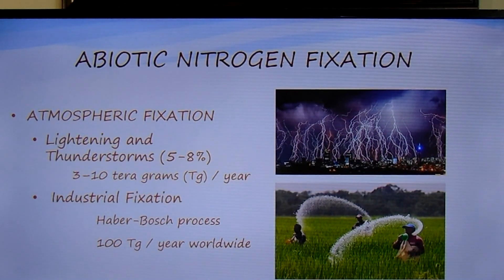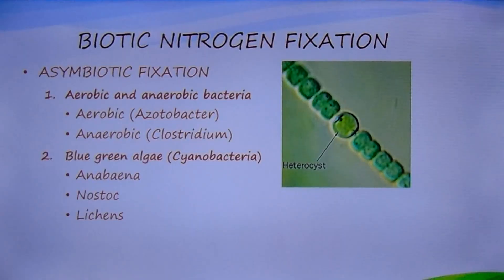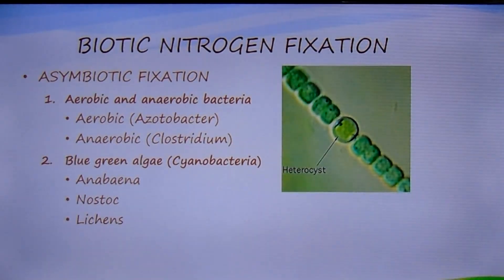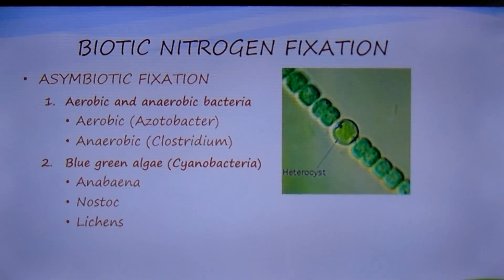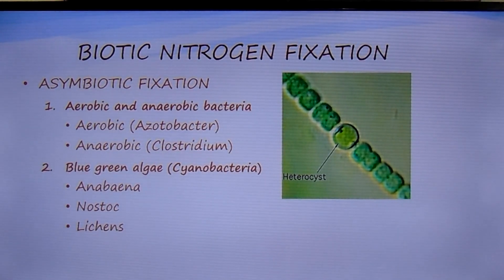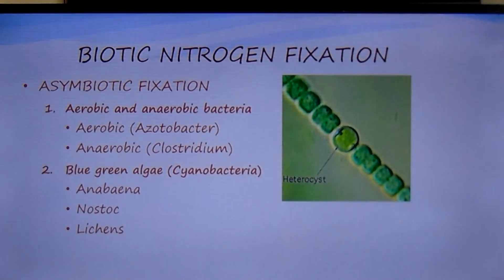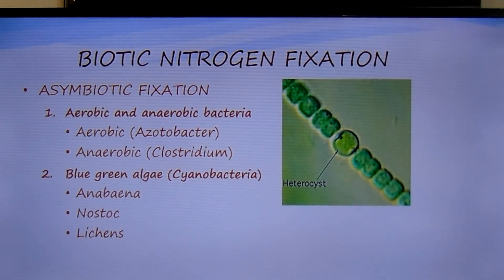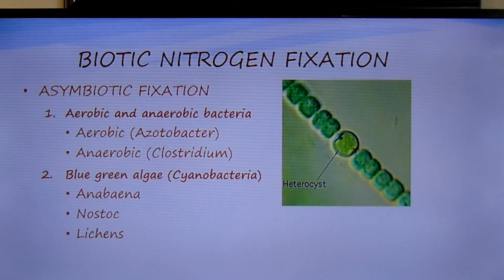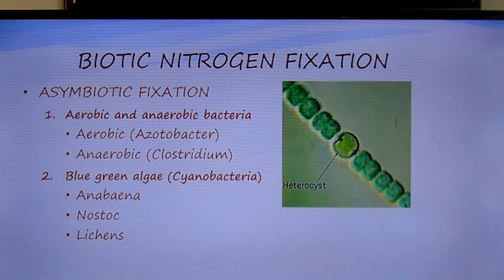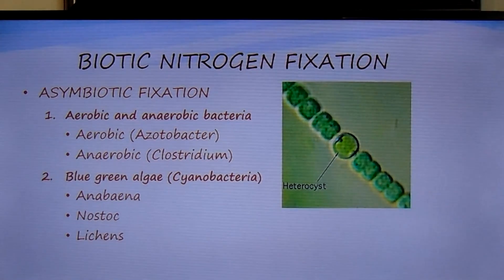Free-living nitrogen-fixing organisms are called asymbiotic organisms. Soil-dwelling aerobic and anaerobic bacteria fix nitrogen to ammonia — these soils must have a good supply of organic manure. Clostridium is an example of anaerobic bacteria, while Azotobacter represents aerobic bacteria. Blue-green algae are another type of autotrophic photosynthetic organism that grow in waterlogged and wet soils like paddy rice fields. Blue-green algae of the families Nostoc and Alicia are important members of autotrophic nitrogen-fixing organisms.